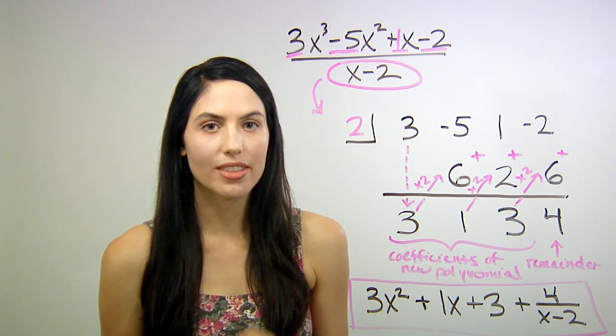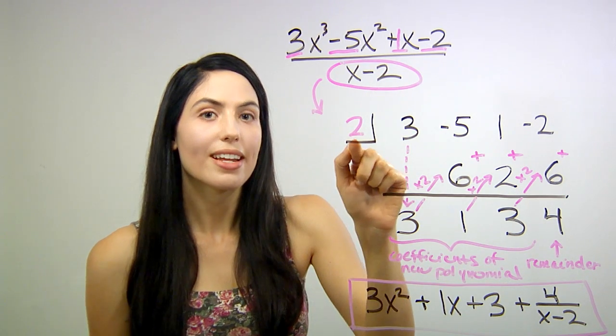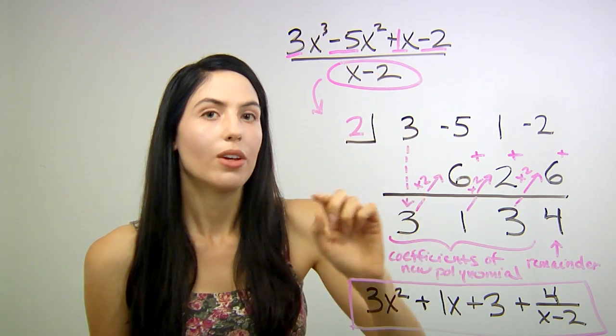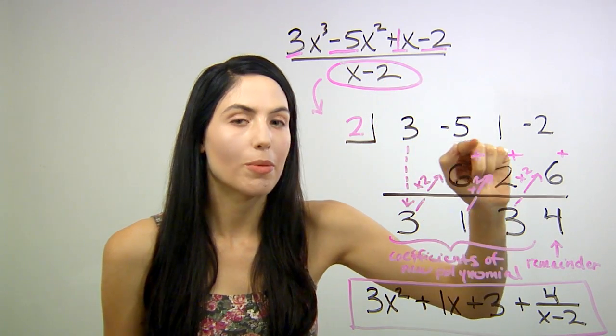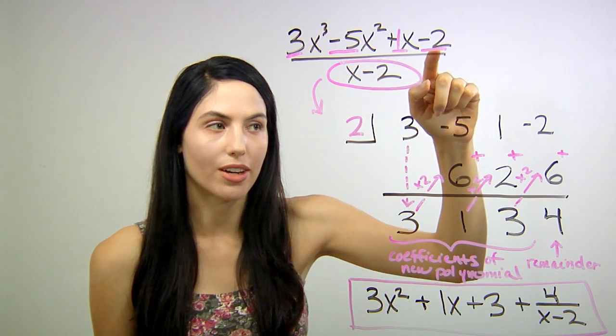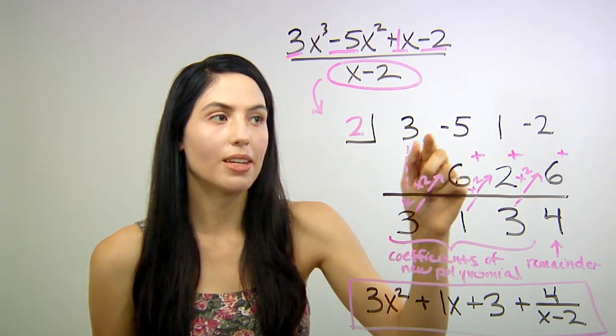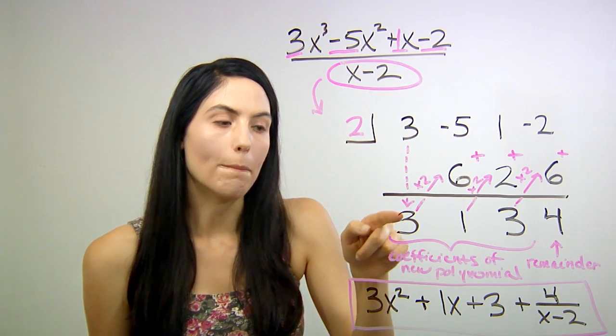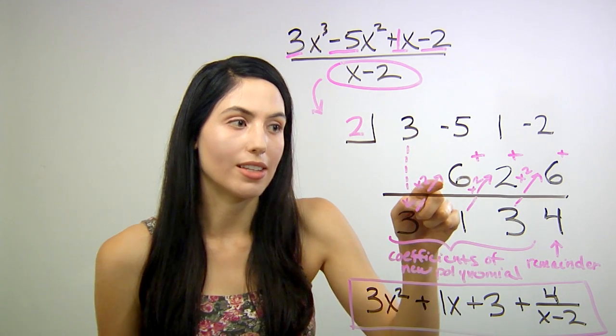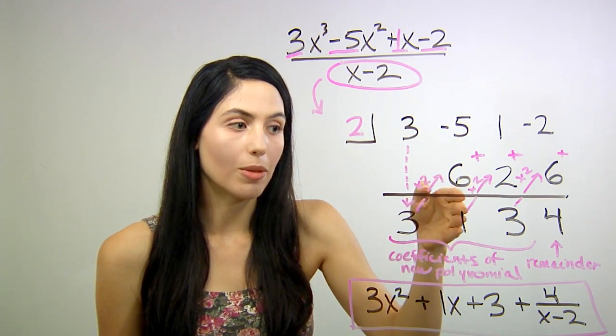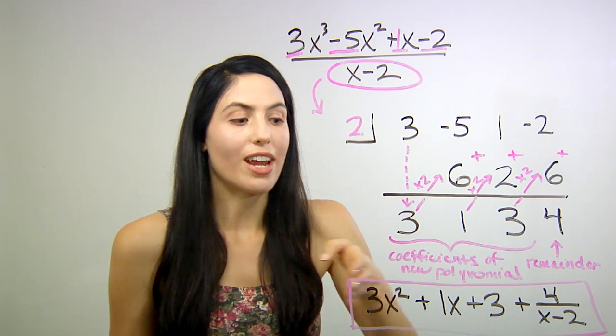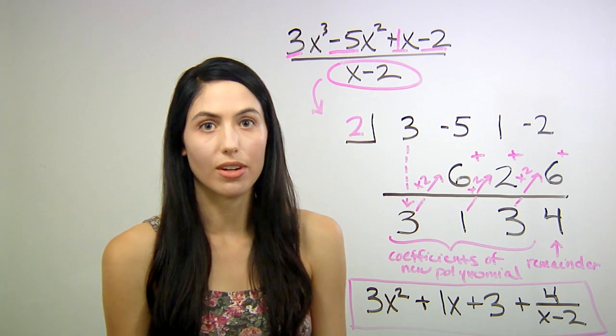Okay, so to summarize, the steps for synthetic division are: write here in the corner the number that makes the bottom of your fraction zero. Write the coefficients of the polynomial from the top of your fraction. If there's a term missing, put zero instead. Bring down the first number. Multiply it by your constant. Write the answer here. Add the column. Repeat those steps until you get to the end of your synthetic division, and then write your final answer using those numbers.